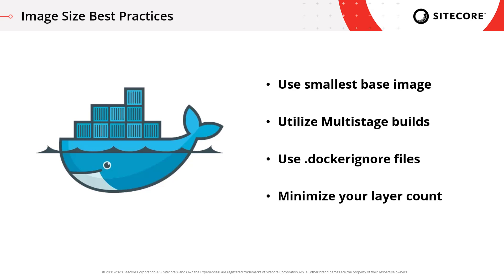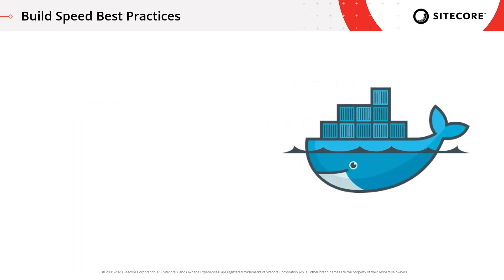Getting your image size down is one thing, but you also need to make sure you're increasing your image build speed where possible, because that's going to give you a much faster feedback loop. Much like you would do in your code, you want to aim for a DRY approach for your Docker builds as well. If the output from your solution is needed in multiple containers, you don't want to build it individually each time, as that introduces unnecessary overhead. Instead, you want to build your solution once and then share that output between all the different images that need it.